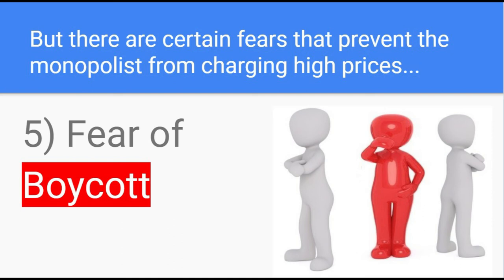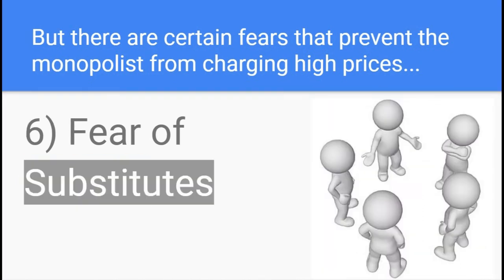Naturally, such a fear compels monopoly firms to charge reasonable prices and earn only normal profits. Then there's also the fear of substitutes. This is the most potent factor which prevents monopoly firms from charging very high prices and earning supernormal profits. It's only under pure monopoly that there are absolutely no substitutes for the product. But pure monopoly, like pure competition, is not applicable to the real world. So the monopoly product has some form of substitute, though not a close one. The fear of emergence of very close substitutes is always uppermost in the mind of the monopolist, and this acts as a restraint on his absolute power.